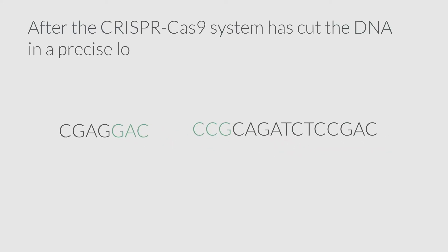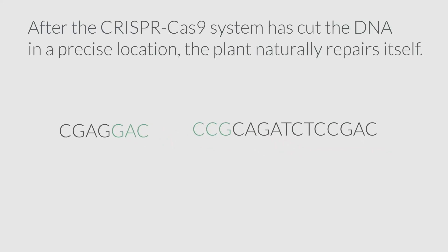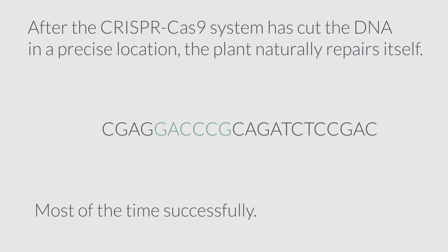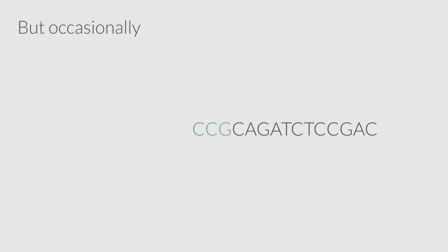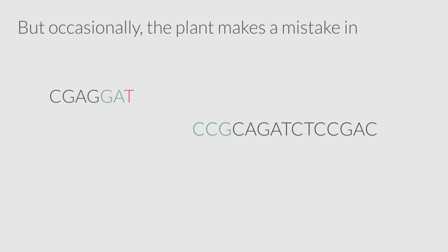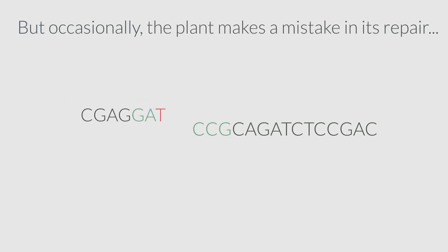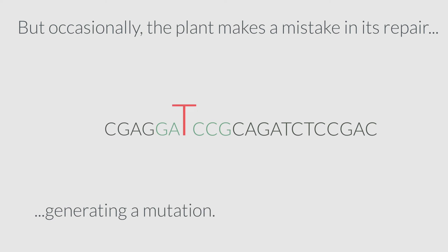After the CRISPR-Cas9 system has cut the DNA in a precise location, the plant naturally repairs itself. Most of the time successfully, but occasionally the plant makes a mistake in its repair, generating a mutation.